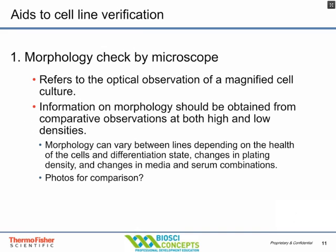When you look at cells under the microscope, do a morphological check. Refer to reference photos and make sure the cells look like they're supposed to. It's important to have photos for comparison from one culture to the next because a cell line can change over a long period of time, and if you're not monitoring the morphology, you might not notice this.